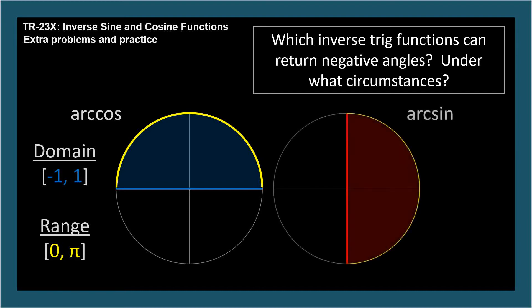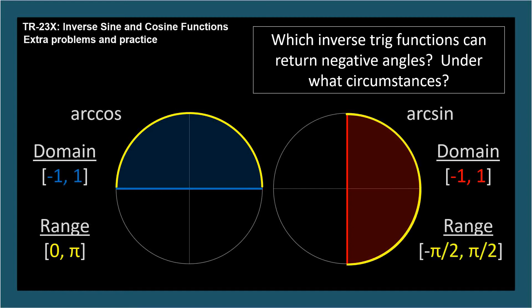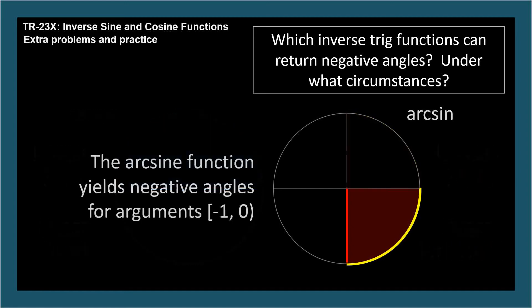Here's the circle to envision for inverse sine, or arcsine. It also has a domain from negative 1 to 1, values on the y-axis as shown in red. The range is the set of angles from negative pi over 2 to pi over 2. This range does include negative angles for arguments from negative 1, up to, but not including, 0. Because the arcsine of 0 is 0, and 0 isn't negative.